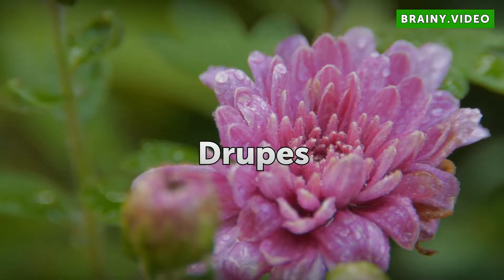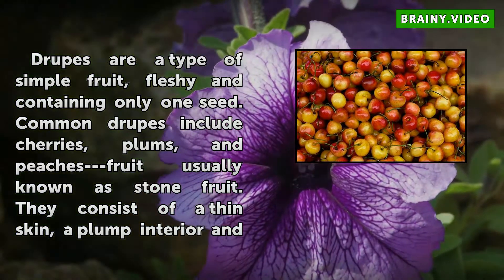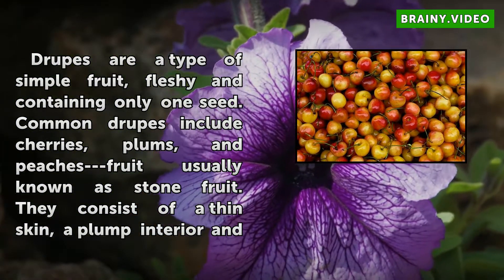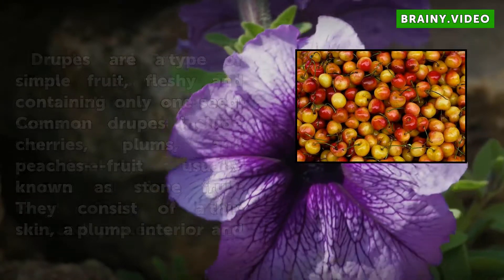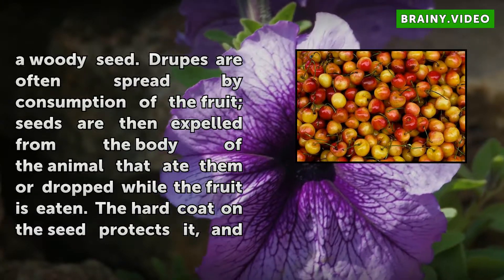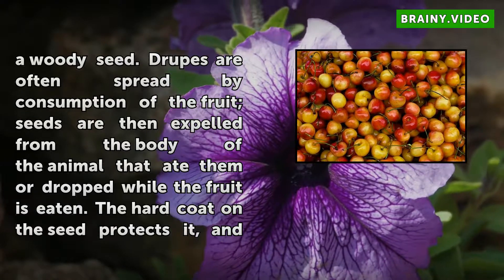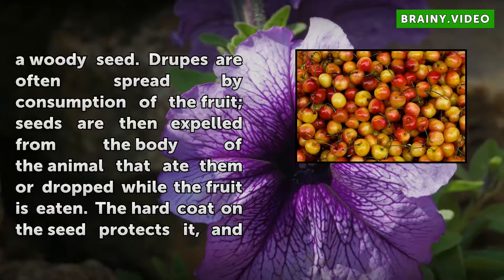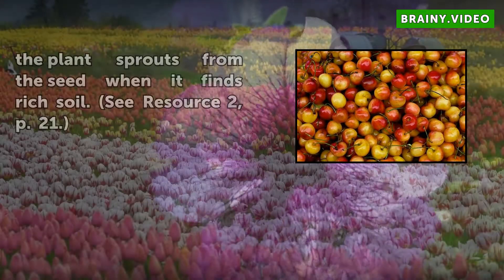Drupes are a type of simple fruit, fleshy and containing only one seed. Common drupes include cherries, plums, and peaches — fruit usually known as stone fruit. They consist of a thin skin, a plump interior, and a woody seed. Drupes are often spread by consumption of the fruit; seeds are then expelled from the body of the animal that ate them, or dropped while the fruit is eaten. The hard coat on the seed protects it, and the plant sprouts from the seed when it finds rich soil.